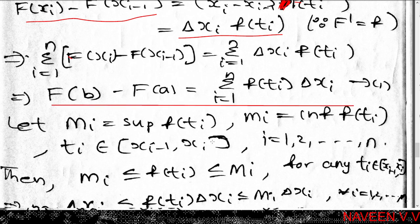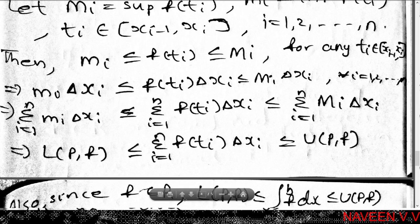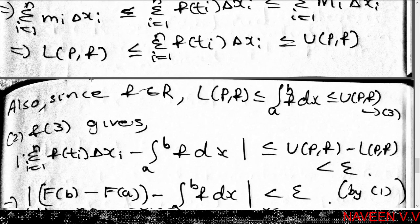Let M_i = sup{f(t) : t ∈ [x_{i-1}, x_i]} and m_i = inf{f(t) : t ∈ [x_{i-1}, x_i]}. Then m_i ≤ f(t_i) ≤ M_i, which implies m_i·Δx_i ≤ f(t_i)·Δx_i ≤ M_i·Δx_i for each i = 1, 2, ..., n. Summing, L(P,f) ≤ Σ f(t_i)·Δx_i ≤ U(P,f). Since f belongs to R on [a,b], L(P,f) ≤ ∫_a^b f dx ≤ U(P,f).